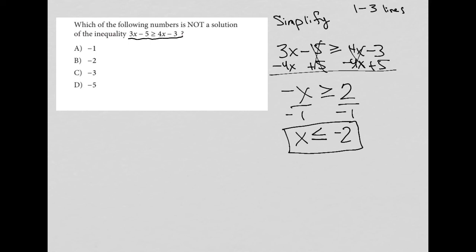Now the trick is, I'm not done. I still need to make sure I read the question. I just have some sense of knowing that now x is less than or equal to negative 2. So the question says, which of the following numbers is not a solution of the inequality?